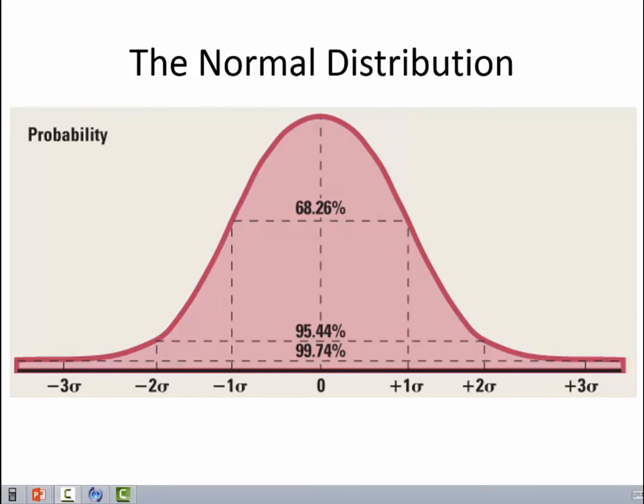Both these tails together, the minus 1 standard deviation on-out and plus 1 standard deviation on-out, contain together 31.74%, but we only need to know the amount that is in the top tail. How do we find that?